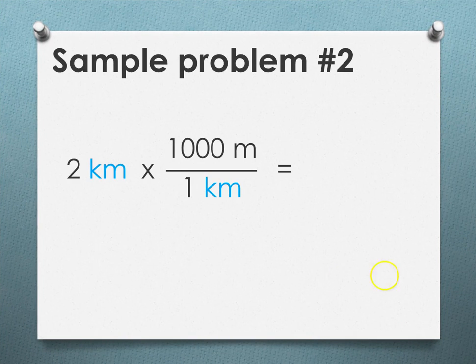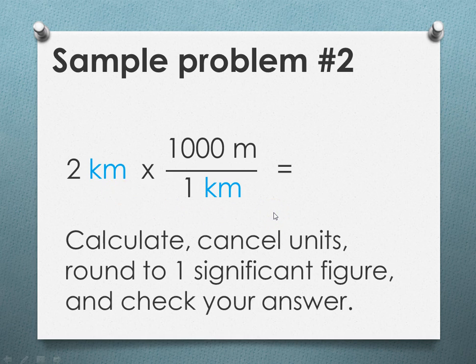So now we're ready to set it up, starting with the given, multiplying by our conversion fact. So we're ready to calculate. First cancel the units, then we're going to round our answer to one significant figure and check the answer. So kilometers divided by kilometers goes away, it equals one. Plug it into our calculator and we get 2,000 meters. And 2,000 meters has one significant figure, as did our given.